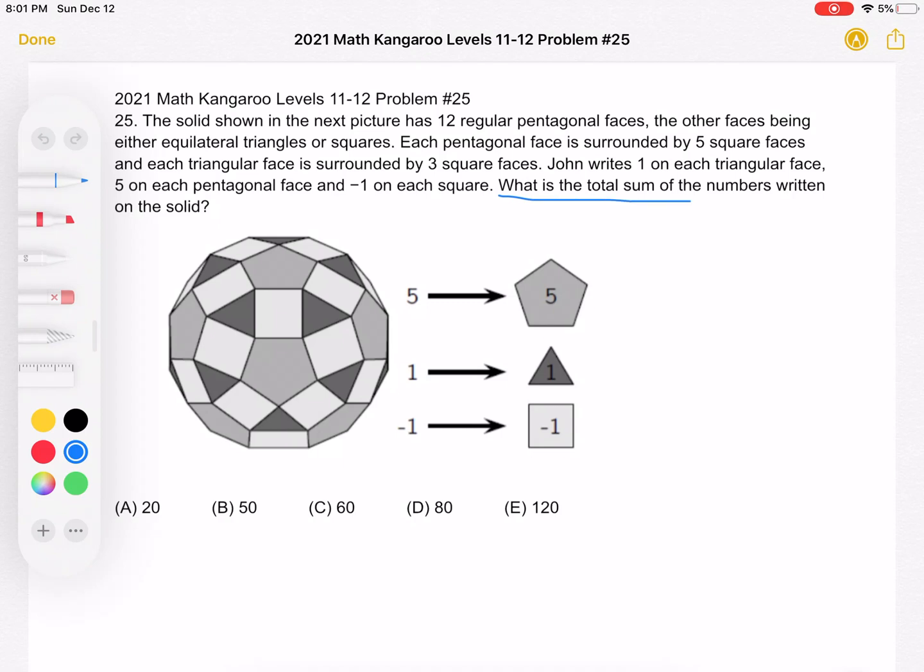So we're trying to figure out the total sum of the numbers written on the solid. We have pentagons with 5s on them, triangles with 1, squares with negative 1. So in order to find the total sum, we want to figure out how many of each of these types of figures we have, because we know what is written on each one of them. So let's start with the pentagons. Well, the problem tells us that we have 12 of them.